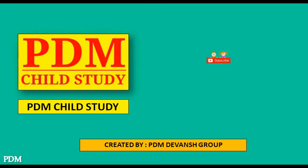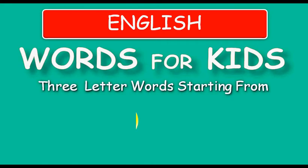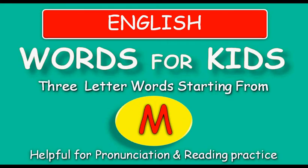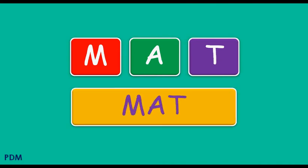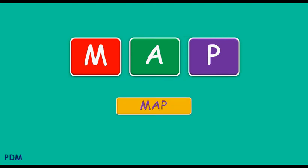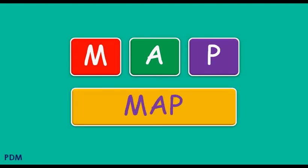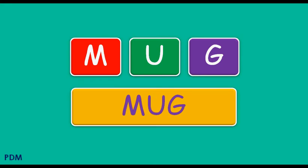PDM Child Study. Subscribe to our channel for more educational videos. English words for kids: three-letter words starting from M. M-A-D: mad. M-A-P: map. M-U-G: mug.